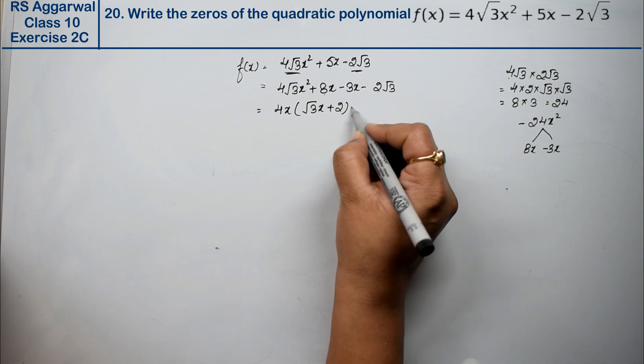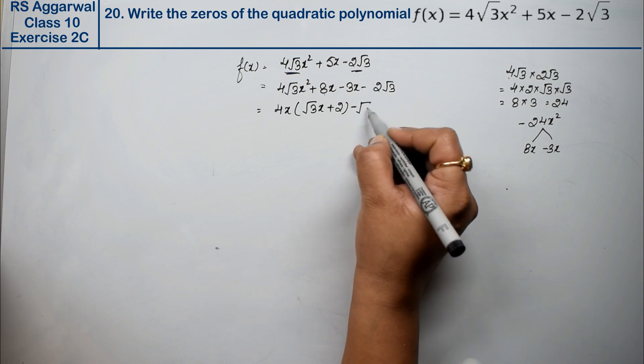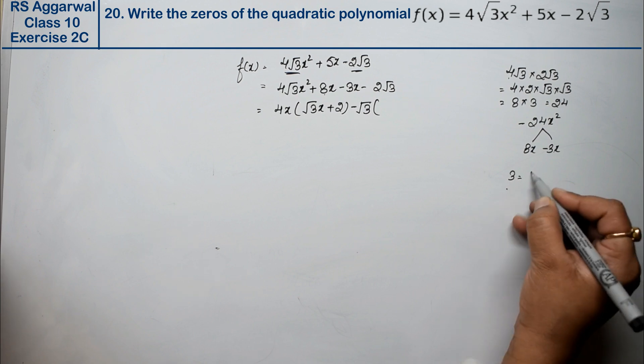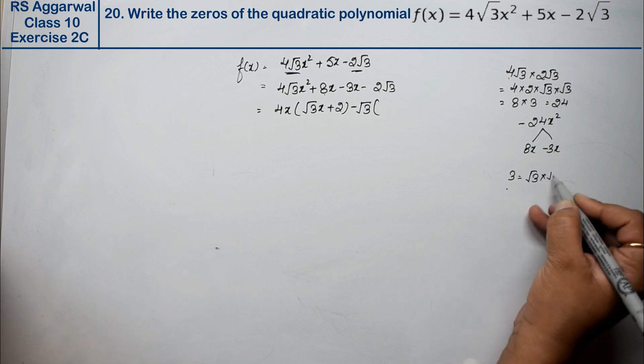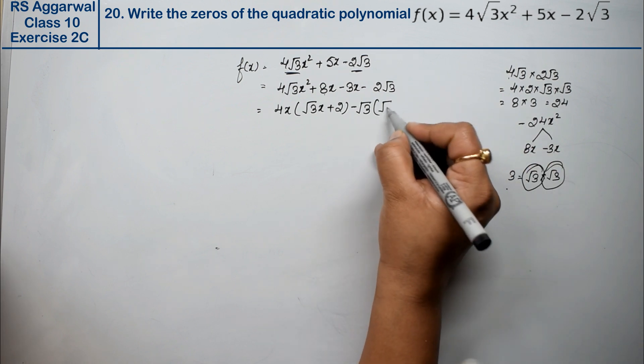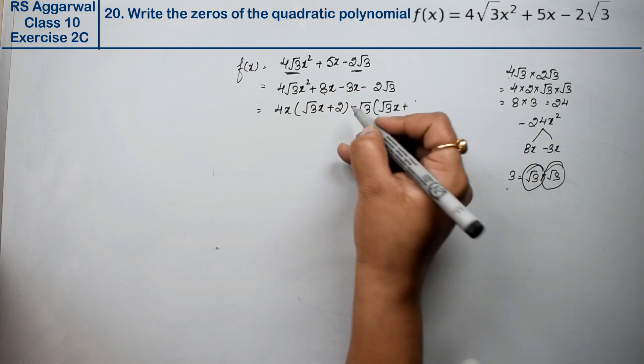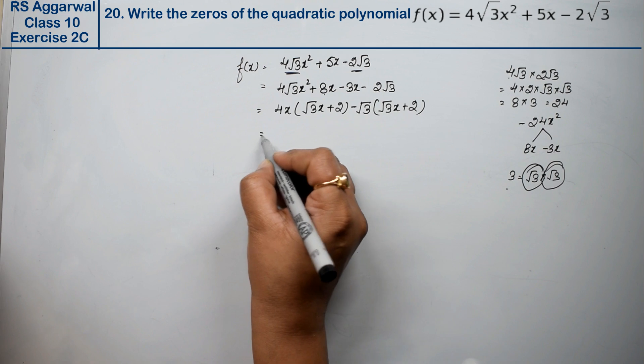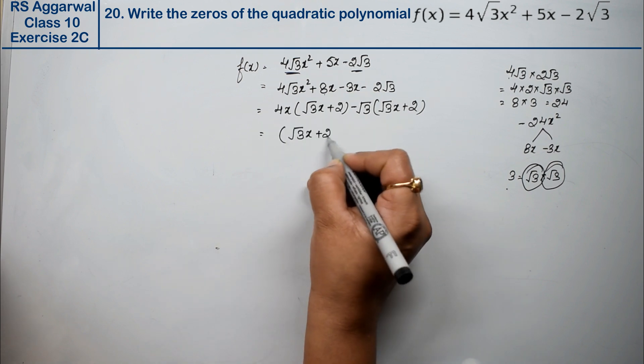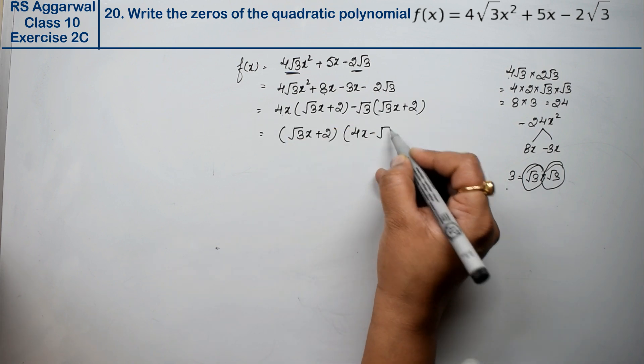Now from these two terms, we can take √3 common. If we take √3 common, what remains inside? We can write 3 as √3 × √3. One √3 comes out as common, so what remains? √3 remains. So we have √3x. Minus becomes plus because we're taking minus out as common along with 2. So what came common? √3x + 2 is common. What remains? 4x - √3.